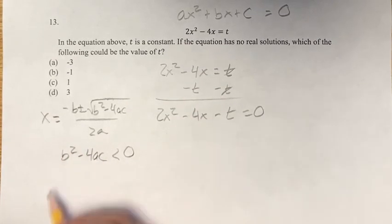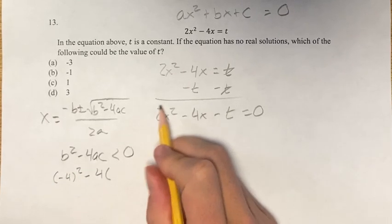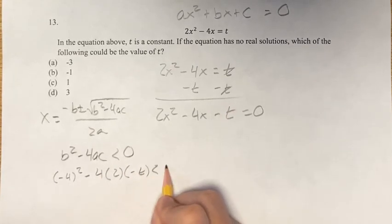b is negative 4, so negative 4 squared minus 4, a is 2, and then c is negative t. This is less than 0,